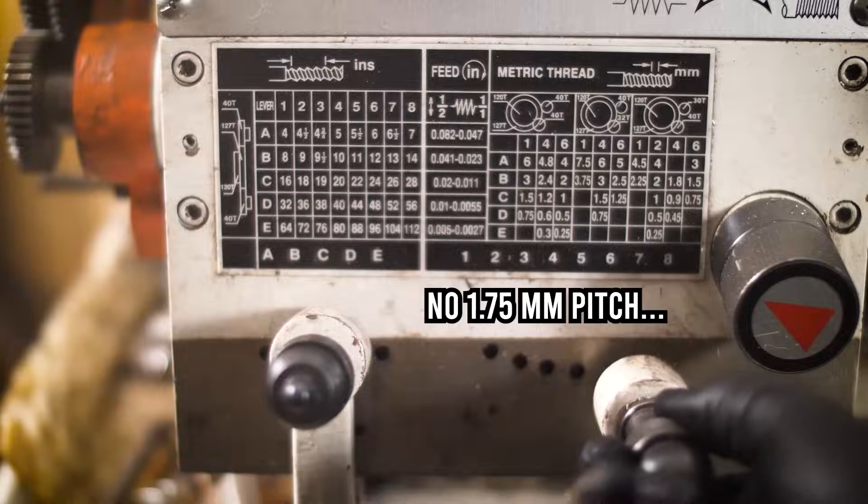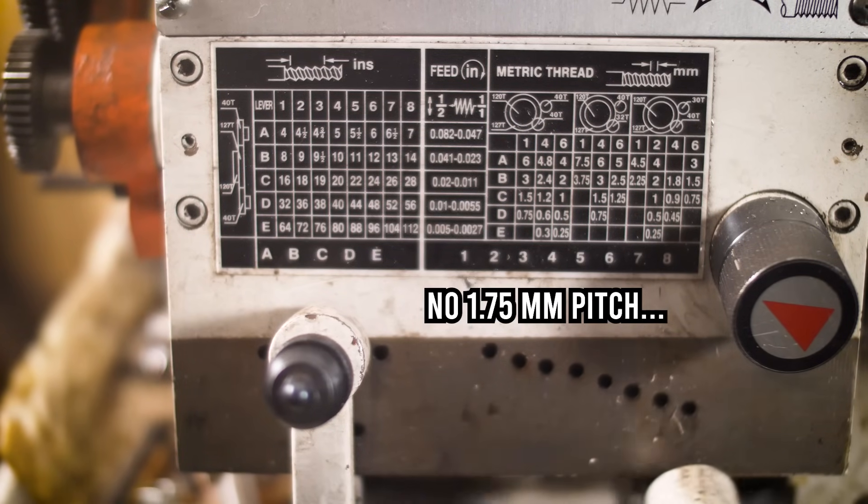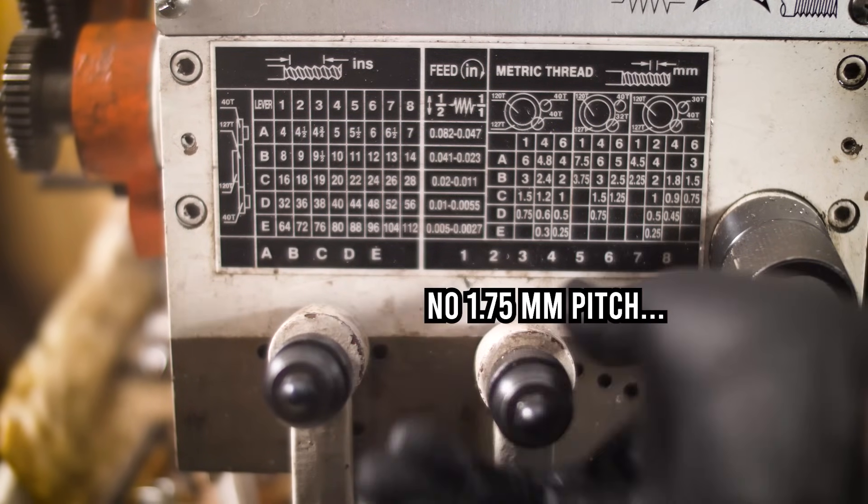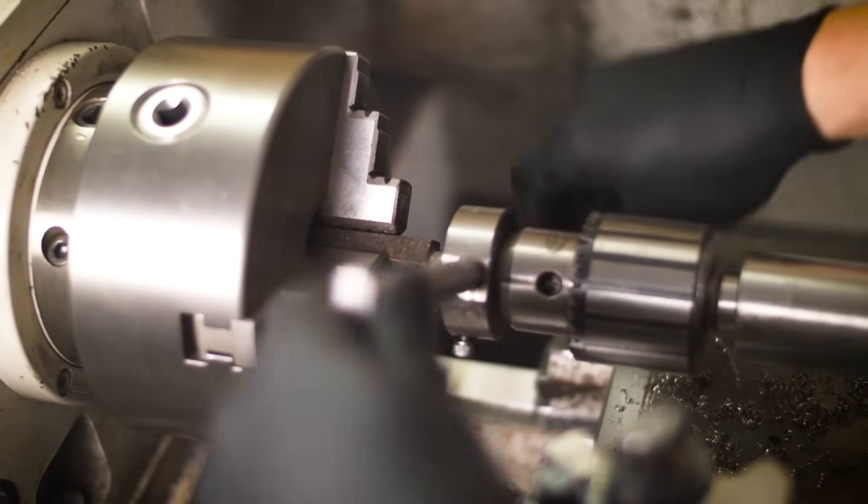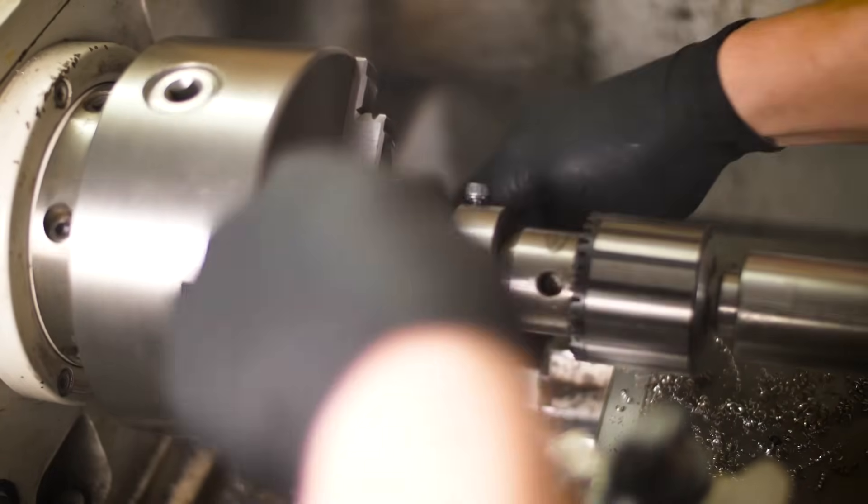There's one drawback with my lathe. The gearing doesn't allow for an M12 thread. And this seems to be a surprisingly common size. And while dies work, they aren't always the best option.